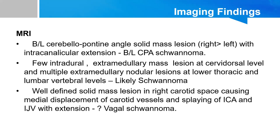His imaging findings on MRI showed bilateral cerebellopontine angle solid mass lesions with intracanalicular extension. A few intradural extramedullary mass lesions were noted at the cervicodorsal level, and multiple small extramedullary nodular lesions were noted at the lower thoracic and lumbar vertebral levels, which were likely schwannomas. There was also a well-defined solid mass lesion in the right carotid space causing medial displacement of the carotid vessels and splaying of the internal carotid artery and internal jugular vein, suggestive of a vagal schwannoma.